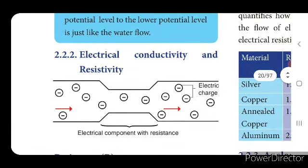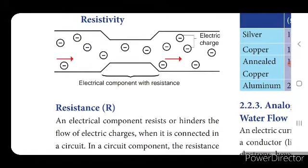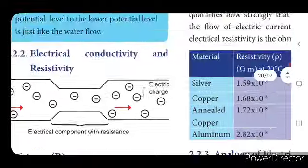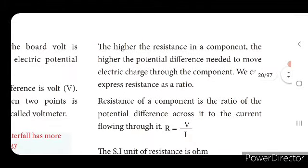Next — electrical conductivity and resistivity. First we will see what is resistance. The electrical component resists or hinders the flow of electric charges when connected in a circuit. In a circuit component, the resistance to the flow of charges is similar to how a narrow channel resists the flow of water. Resistance is the electrical component which will resist or hinder the flow of electric charges. The higher the resistance in the component, the higher the potential difference needed to move electric charge through it.